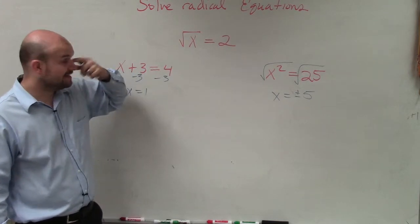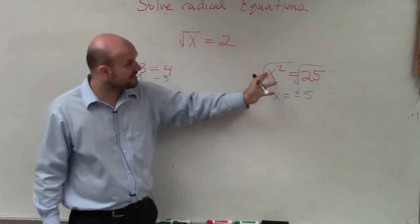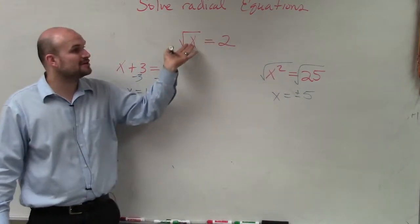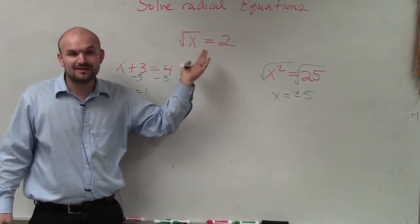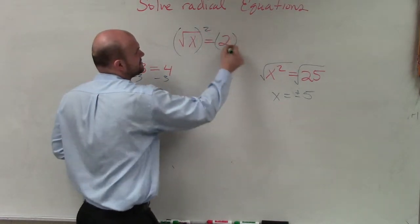we need to take the inverse operation so we can just get it to x. So if the inverse operation of squaring is square root, the inverse operation of the square root is going to be square. So we're going to square both sides.